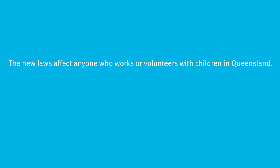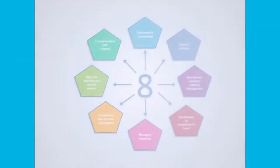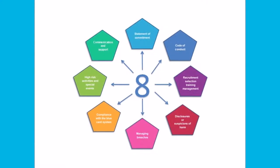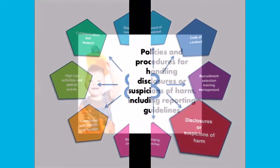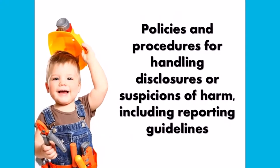All organizations falling within the scope of the blue card system are required to develop and implement child and youth risk management strategies which address eight minimum requirements. This video will guide you through the fourth of the minimum requirements, which is the requirement to have policies and procedures for handling disclosures or suspicions of harm, including reporting guidelines.